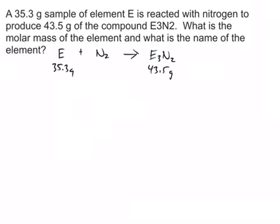What we need to find is the grams of E per mole of E. That would give us the molar mass, and then we could look on the periodic table and determine what element it is.